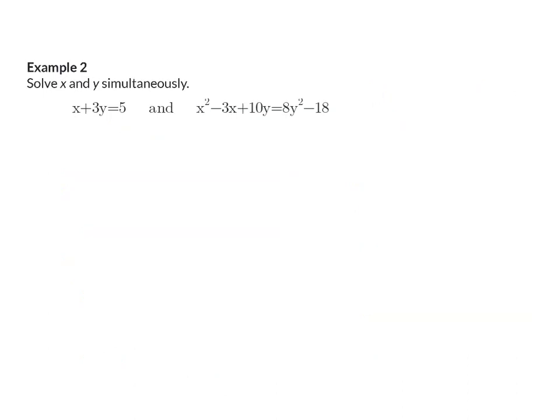Example 2. Solve x and y simultaneously. Once again, we are given two equations, so I'm going to start off by getting one of the variables alone in one equation. So I'm going to choose to get x alone in the first equation, so that will be 5 - 3y.